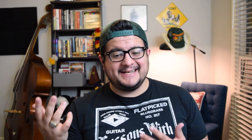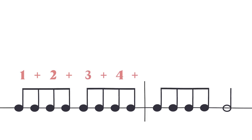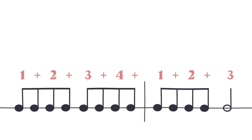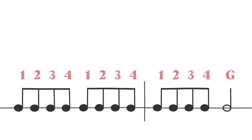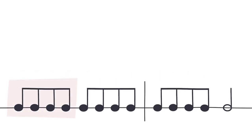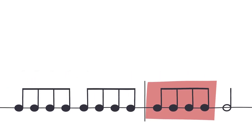Let's talk about phrase length. Every tag we've seen is two measures long, ending on the open G string on beat three of the second measure. You can count this in different ways. The traditional way: 1 and 2 and 3 and 4 and 1 and 2 and 3. An alternative is counting groups of eighth notes: 1, 2, 3, 4, 1, 2, 3, 4, 1, 2, 3, 4, G. We need three groups of eighth notes and then the G note to end.